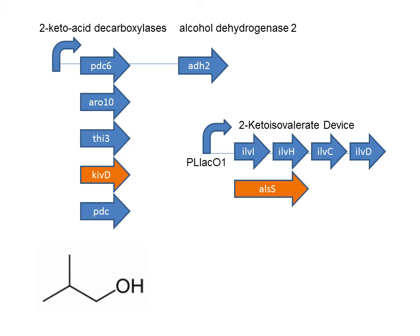They also find that overexpressing a second copy of the first few steps of leucine biosynthesis improves production. They also examine an alternate route to 2-keto isovalerate from B. subtilis encoded by AlsS, and observe a slightly further improvement in production.